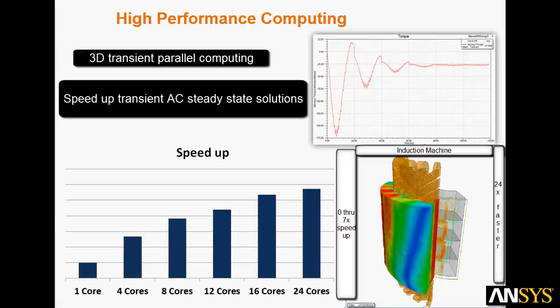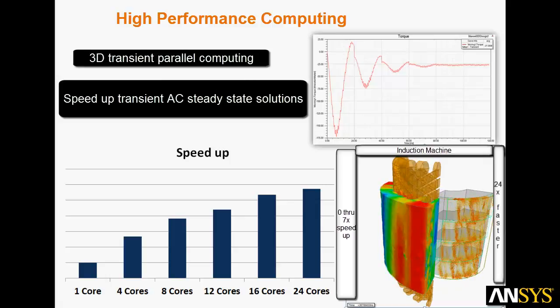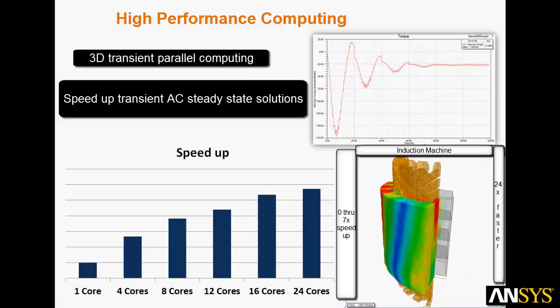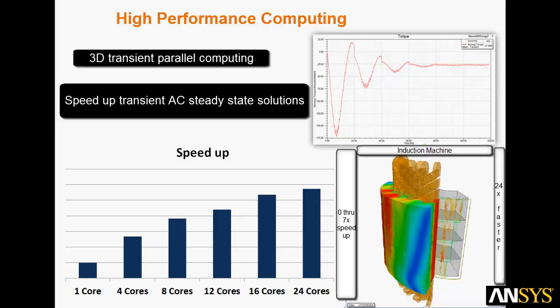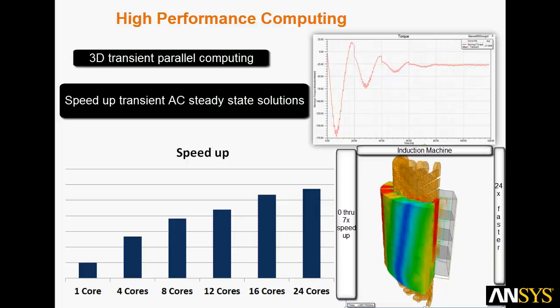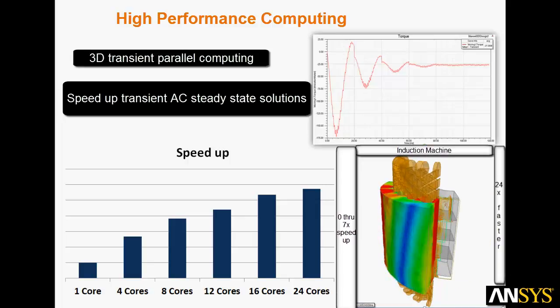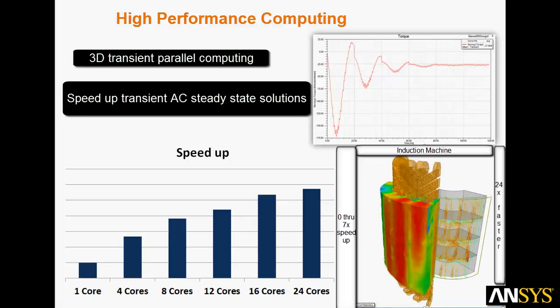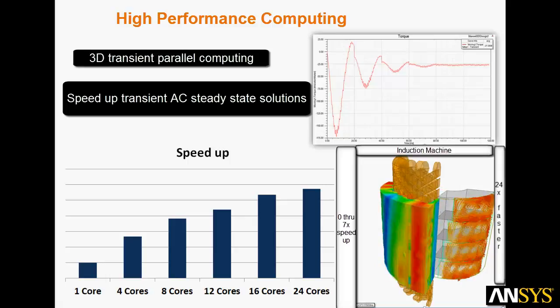High-performance computing speeds the solution of electric machines. ANSYS Maxwell can use parallel computing to speed 3D transient simulations. Here you see transient simulation of a large permanent magnet machine using parallel computing. The bar chart shows 5 to 6 times speed up and excellent scaling using multiple cores. We've also sped up the transient AC steady state solutions. Here you see an induction machine that reached steady state 24 times faster using an advanced new algorithm.